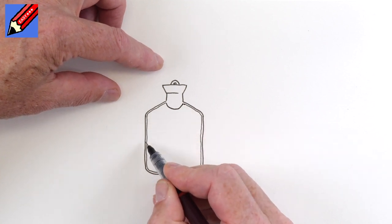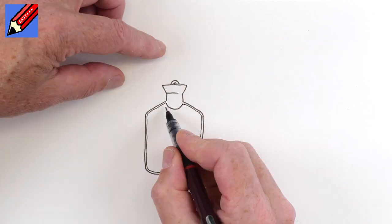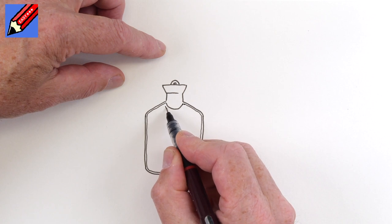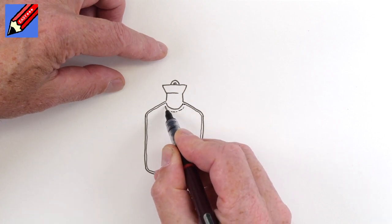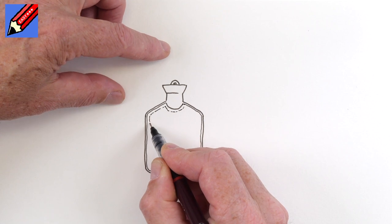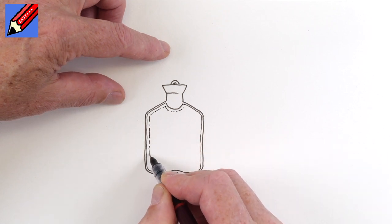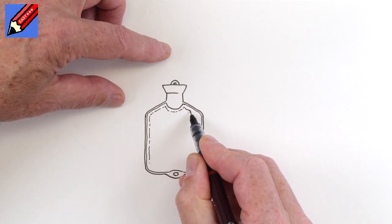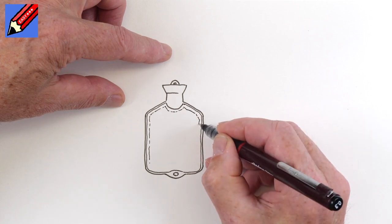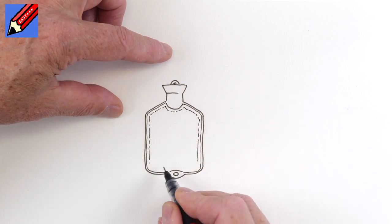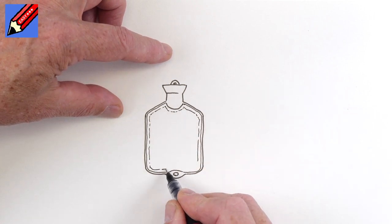So this is like the seam all the way around the edge. And then we want to do a kind of hesitant dotted line, following around like that on the inside. Slightly kind of crazy line, slightly broken up kind of line.